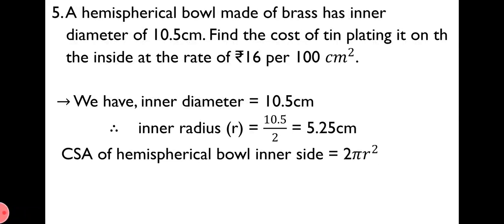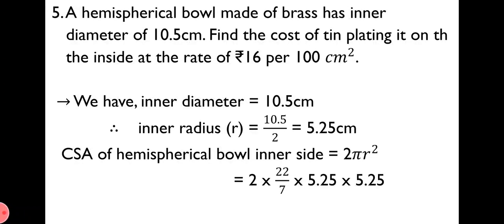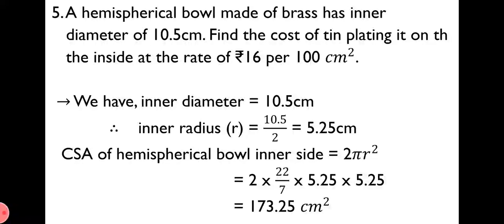Now, curved surface area of the hemispherical bowl on the inner side = 2πr². By inserting the values, we get 2 × (22/7) × 5.25 × 5.25. Further solving, we get equal to 173.25 cm².